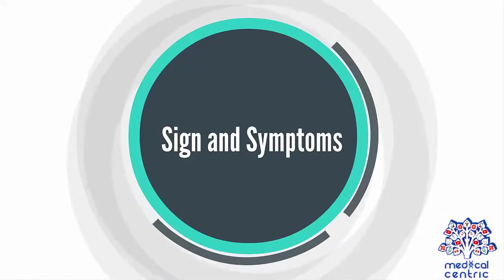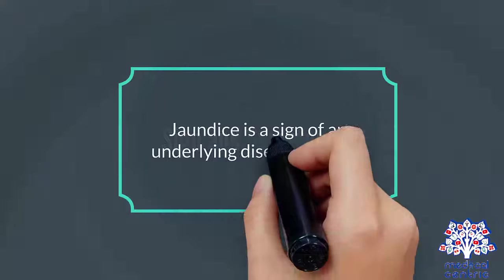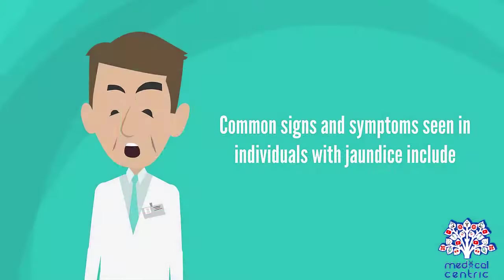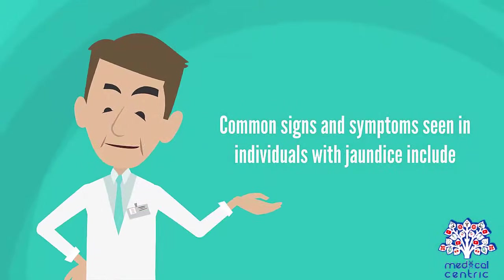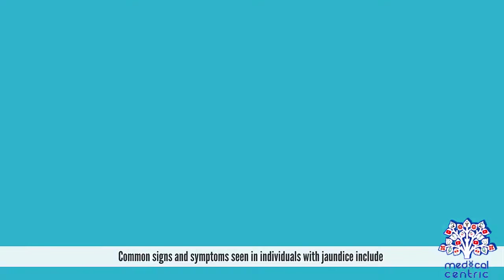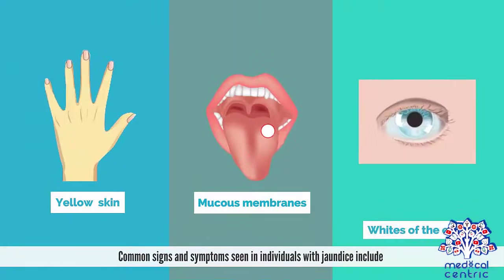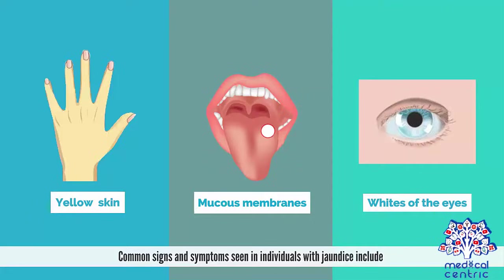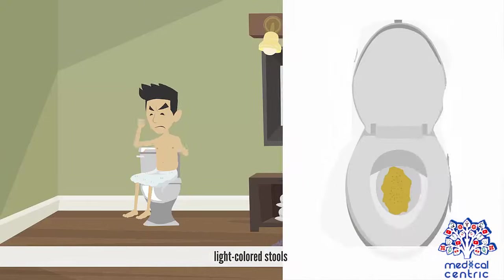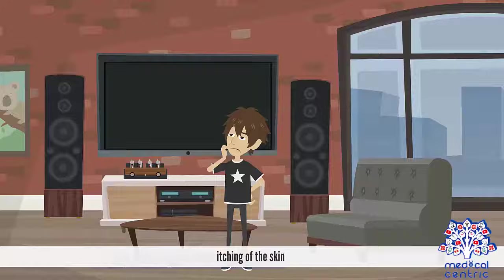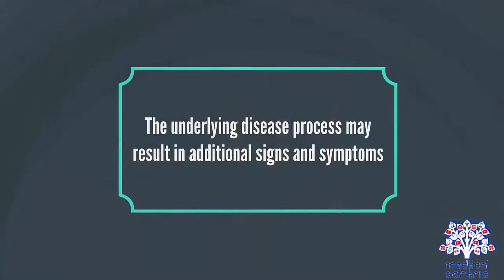Jaundice is a sign of an underlying disease process. Common signs and symptoms seen in individuals with jaundice include yellow discoloration of the skin, mucous membranes, and the whites of the eyes, light colored stools, dark colored urine, and itching of the skin. The underlying disease process may result in additional signs and symptoms.